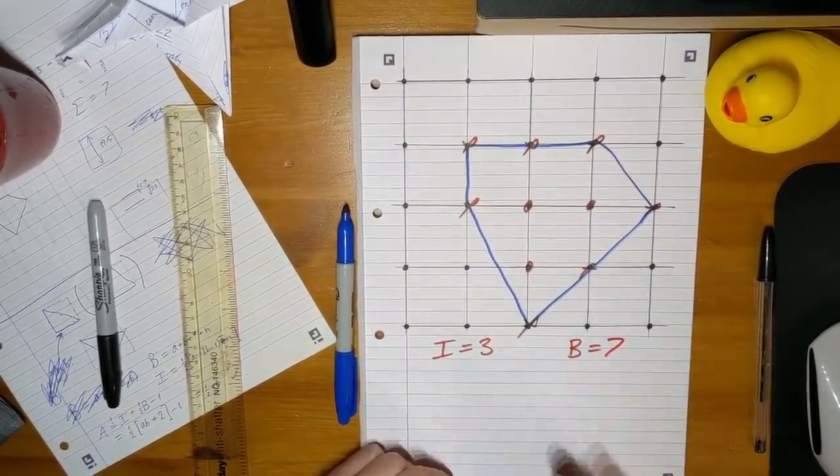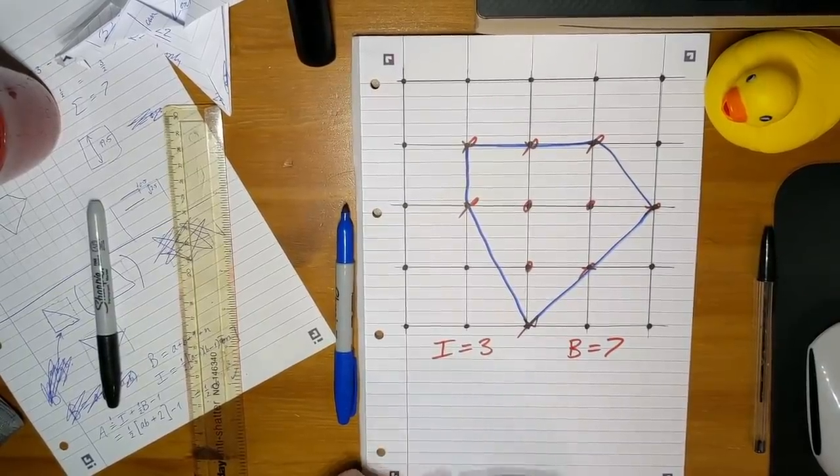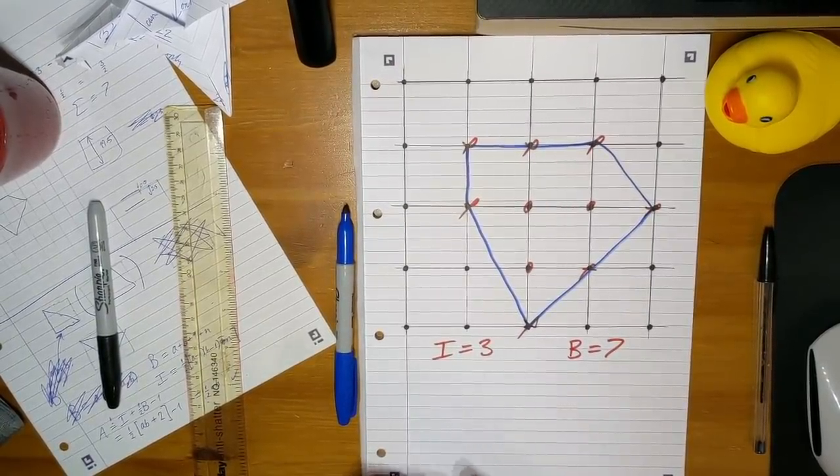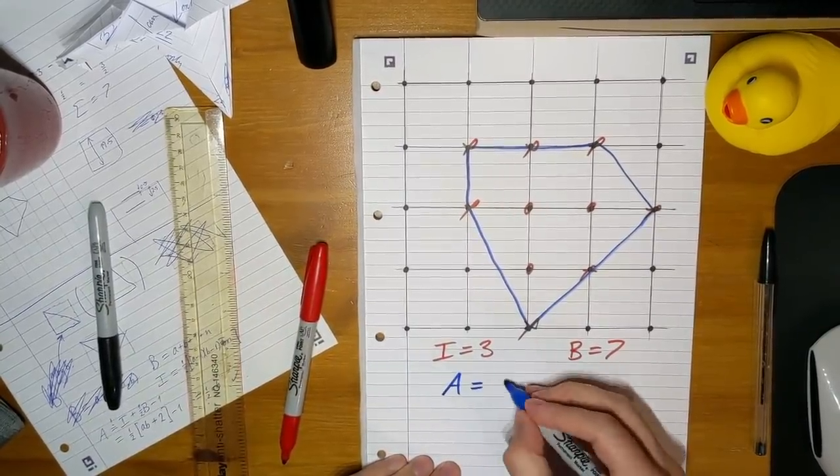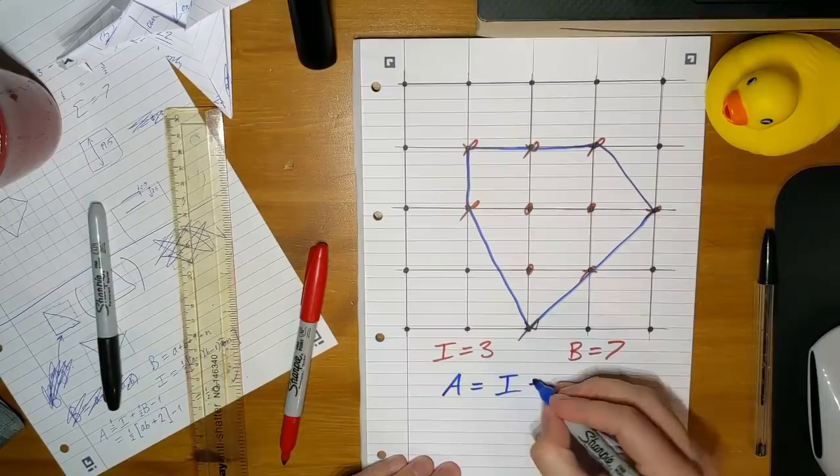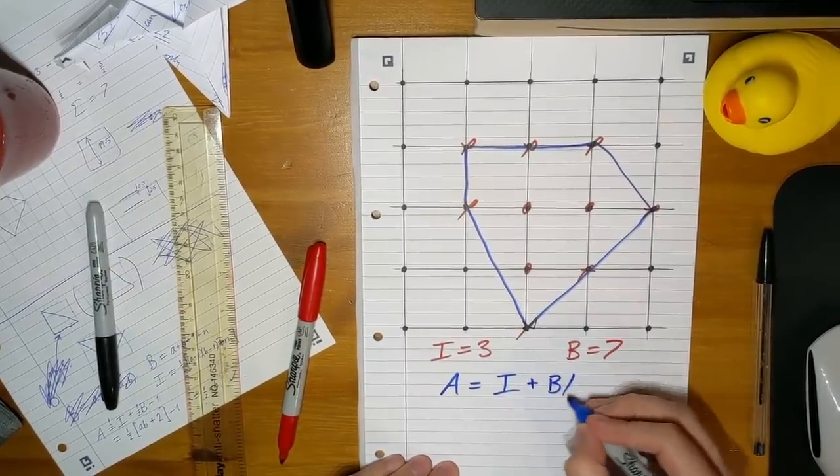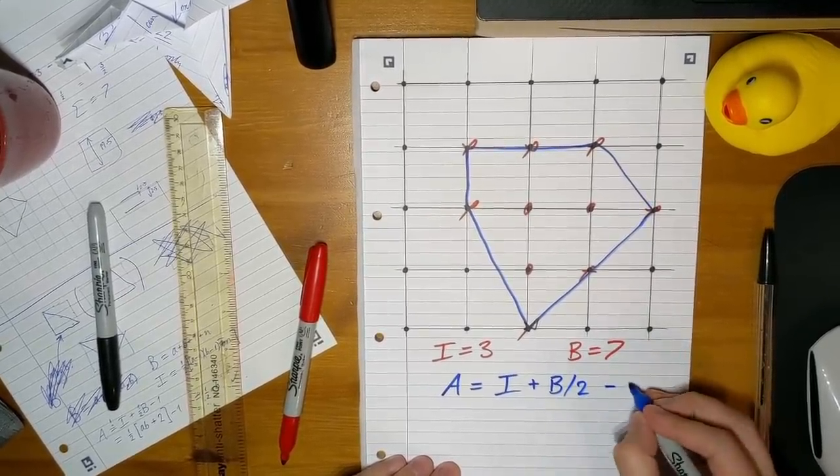And then Pick's theorem says that the area of this shape, which we call a, is given by this really simple formula: i plus a half of b, b over two, minus one.